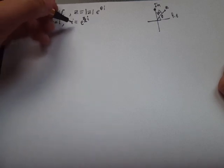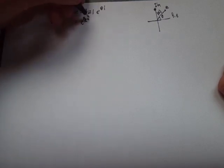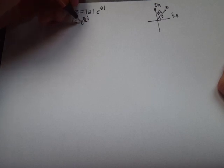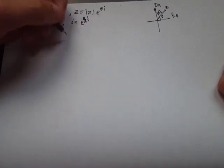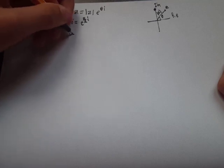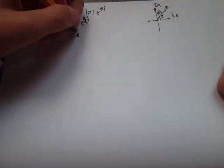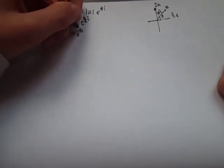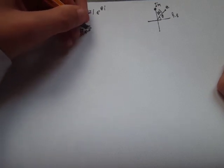From here we can see that we can put in the place of i here in the exponent the whole expression itself, giving us i equals e to the π over 2 times e to the π over 2 times i.